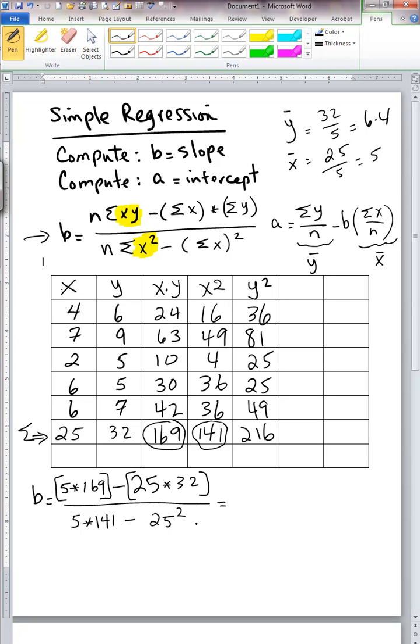So 5 times 169 is 845. And 25 times 32 is 800. Divided by, and then we have 5 times 141, which is 705, minus the 25 squared, which is 625.